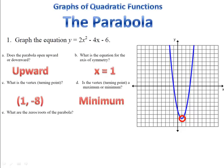What are the zeros or roots of the parabola? The zeros or roots are where the parabola crosses the x-axis. We have those at the points (-1, 0) and (3, 0).